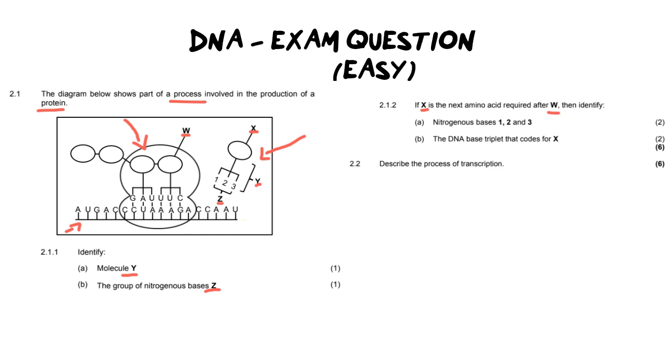Let's go on to 2.1.2. Now it says if X is the next amino acid required after Y then identify the following first of all you need to identify what are the bases 1, 2 and 3. So what we're going to do is we're going to go over and we're going to look at the genetic code on the mRNA. Now the next three bases are these three here these are the codons that are sitting on our mRNA and they are ACC. Now don't get caught into the trap of writing ACC that is just the codon letters. We want the nitrogenous bases on our X and so that means we want the complementary bases and so the answer we are looking for should be UGG. Okay that's the complementary side. Remember there is no letter T in any form of RNA.